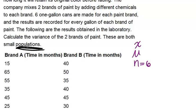All right, so let's calculate the mean first. And to do that, remember you have to add up all six values and divide by six because there are six values. So to do that, first add up 15 plus 65 all the way to 25 and you get 240. And then we divide that by six because we have six values and we get our average, our mean mu is 40 for brand A.